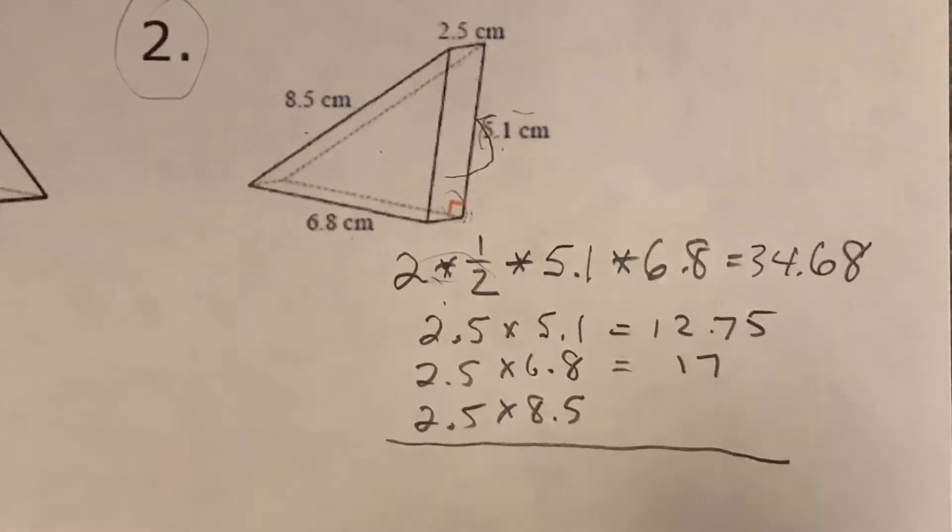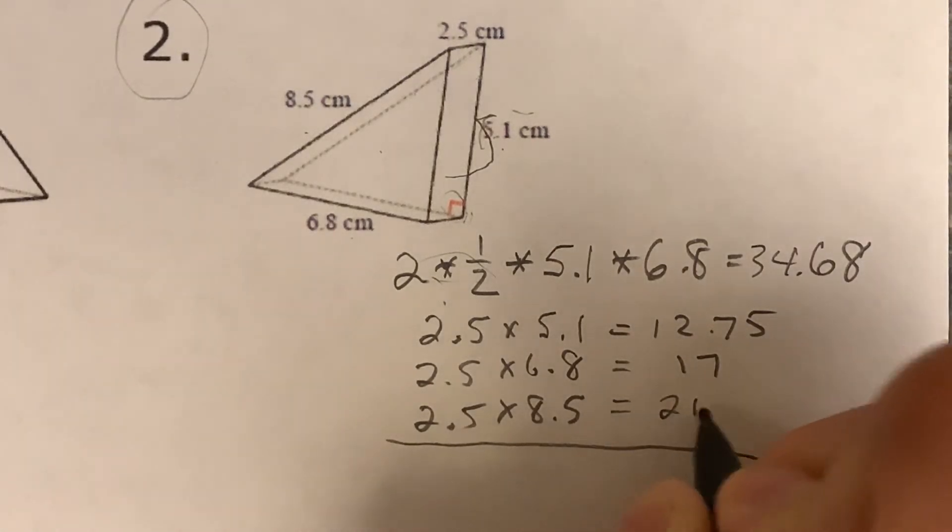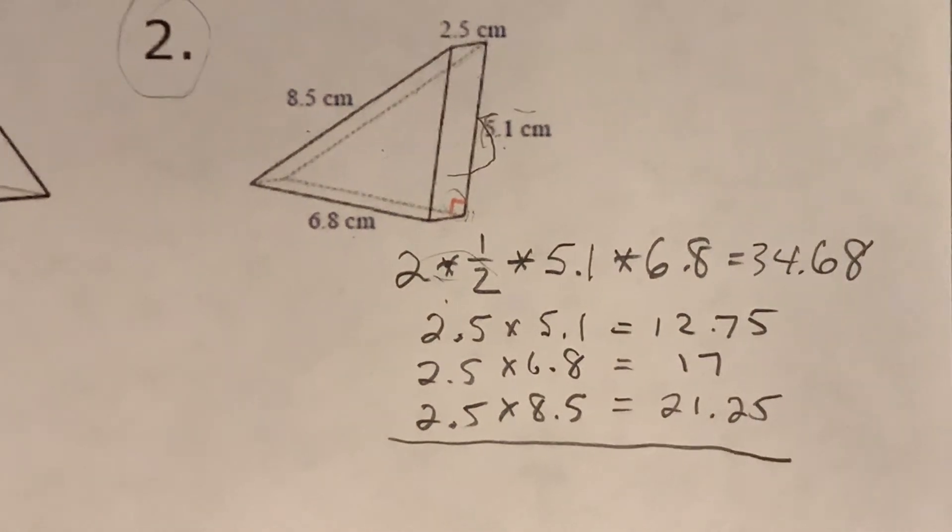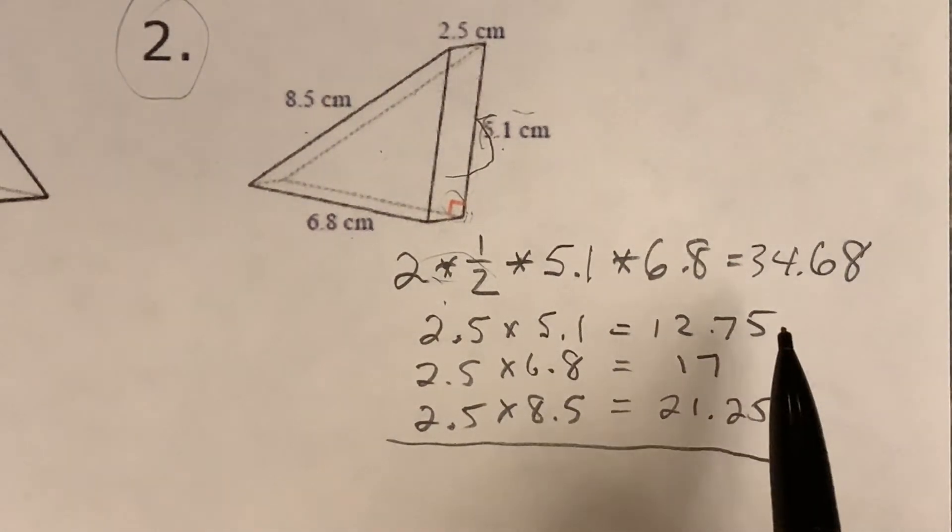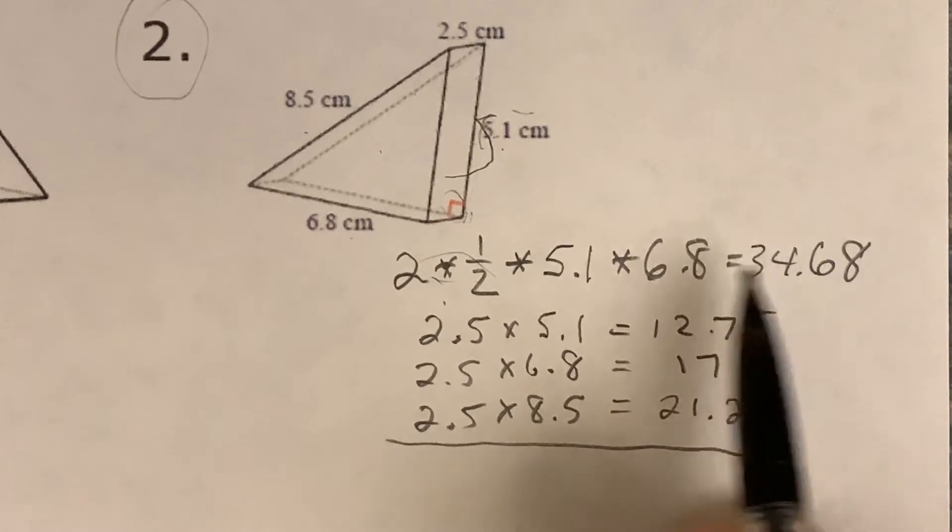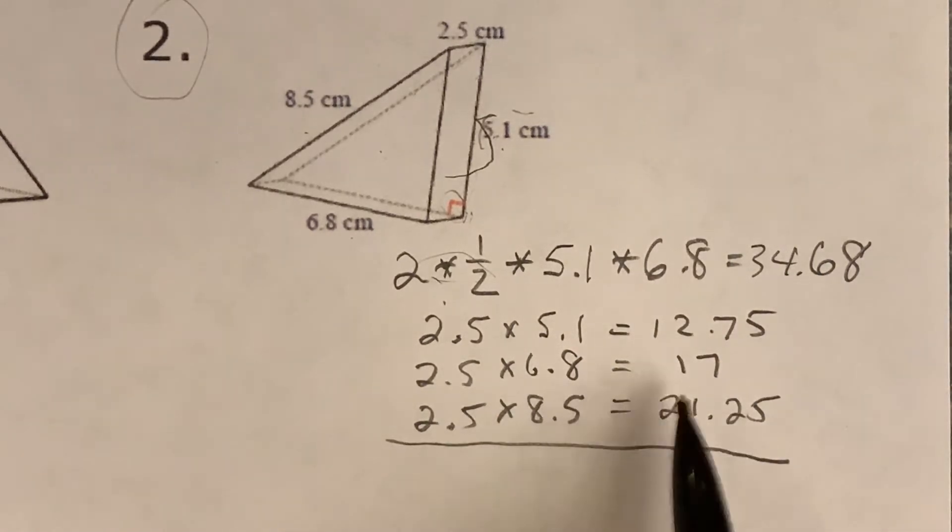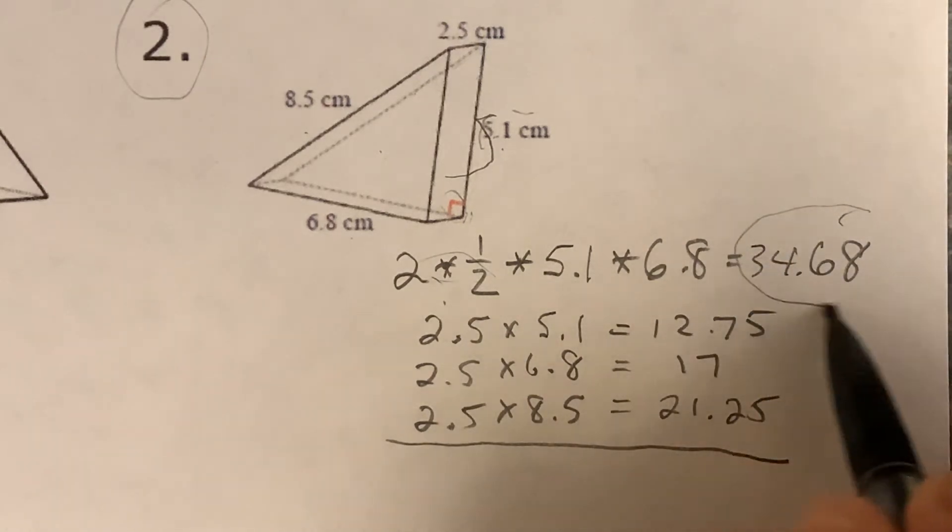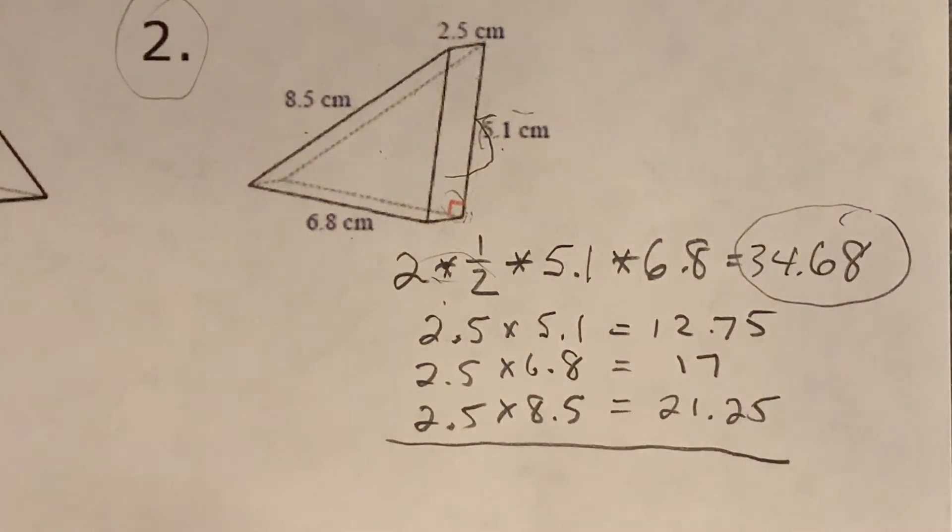2.5 times 6.8 is 17. And then we got 2.5 times 8.5, that's going to be 21.25. Common mistake kids make - I've been doing this for almost 20 years - common mistake kids make is they forget to add in this one right here because it's not part of the three. Remember yesterday we had three things, so they just add these up. Don't forget to add this one in too. They all got to add in together.